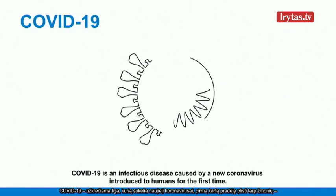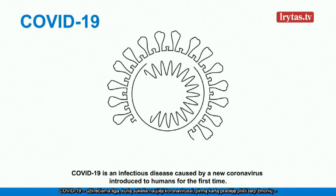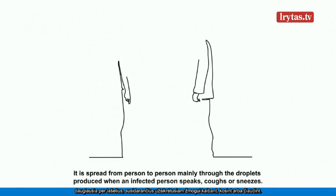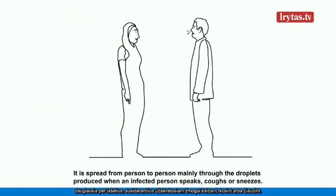COVID-19 is an infectious disease caused by a new coronavirus introduced to humans for the first time. It is spread from person to person, mainly through the droplets produced when an infected person speaks, coughs or sneezes.